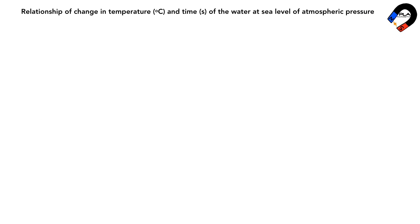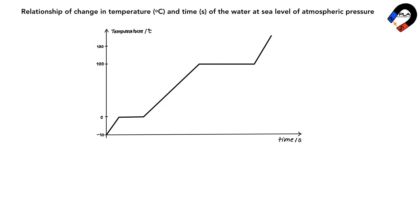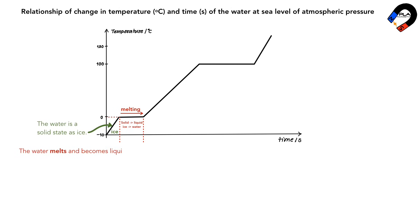Here is the graph that shows the relationship of change in temperature in degrees Celsius and time in seconds of water at sea level atmospheric pressure. Between minus 10 and 0 Celsius, the water is in a solid state. At 0 Celsius, the water melts and becomes liquid.